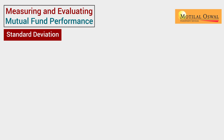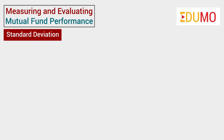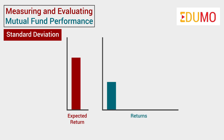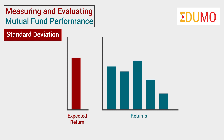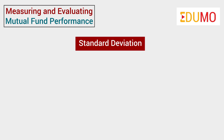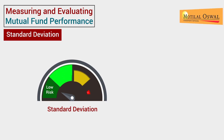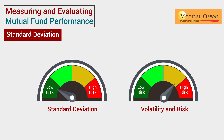Now, let's discuss standard deviation. As most of us would know, this measure is used to check the dispersion of all data from its average. For a fund, it is used to check the deviation of all returns from expected returns based on historical data. Therefore, standard deviation is a popular way to measure the volatility of a fund. The higher this deviation is, the higher is the fund's volatility and risk, and vice versa.